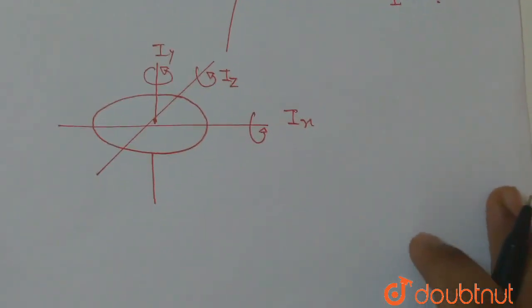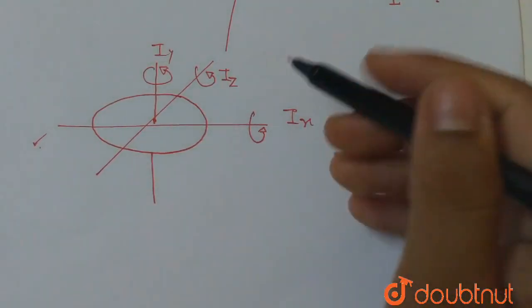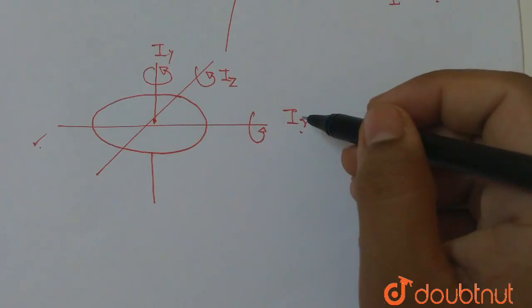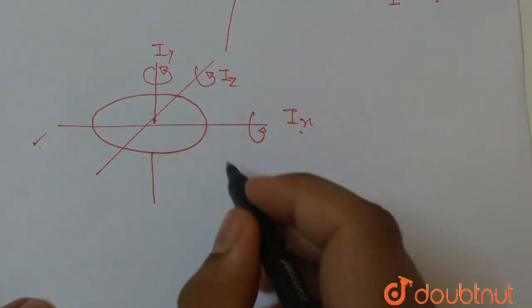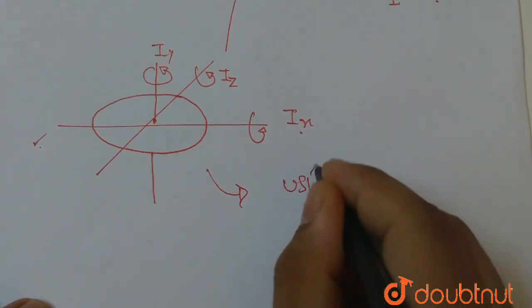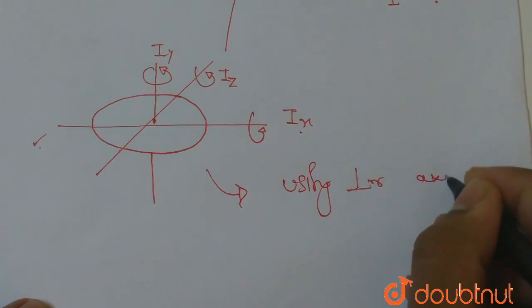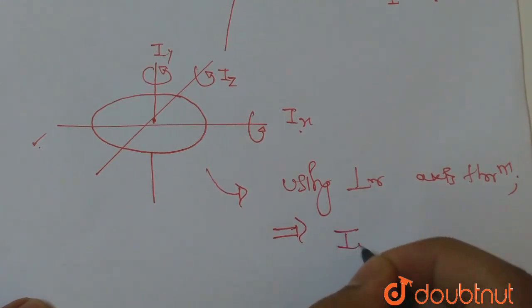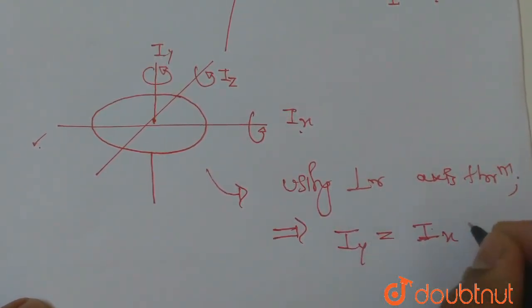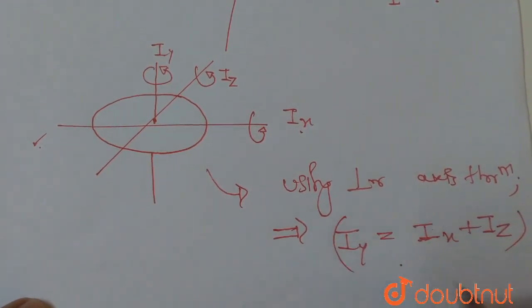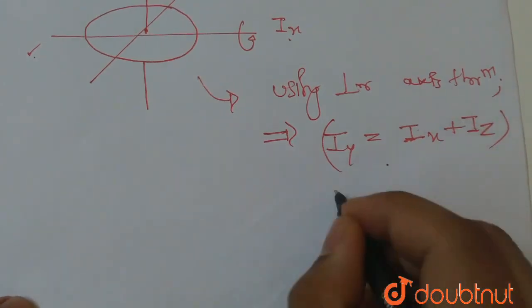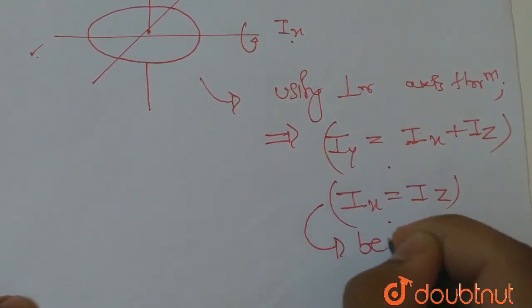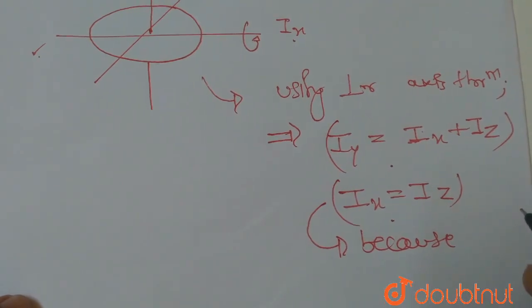Now we have moment of inertia through the x-axis, moment of inertia through the y-axis, and moment of inertia through the z-axis. Using the perpendicular axis theorem, Ix plus Iy equals Iz. Because of the symmetry of the body, Ix equals Iy.